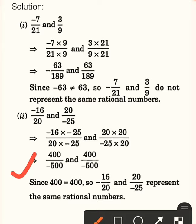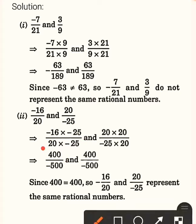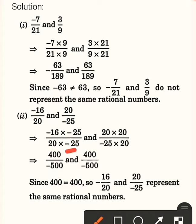For the first part: 16 into 25 is 400, and minus into minus becomes plus, so we get positive 400. In the denominator, 20 into 25 is 500, but there is one negative sign, so the denominator is minus 500. For the second part: 20 into 20 is 400, and the denominator is the same minus 500.